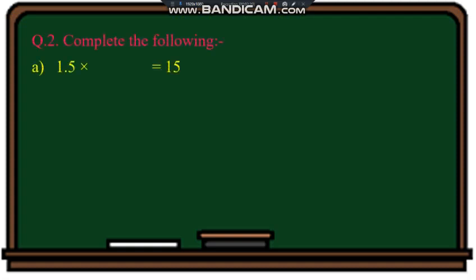Let's see this: 1.5 into dash equals to 15. In the product we don't have any decimal — that is, the decimal is shifted one place to the right. So ten will come, meaning one zero — the answer is ten.